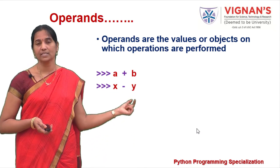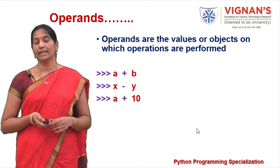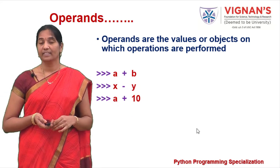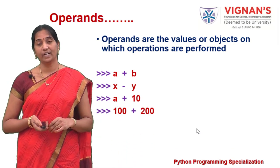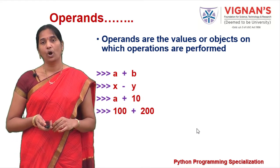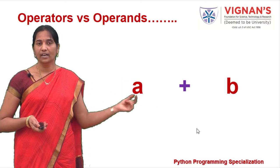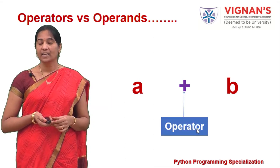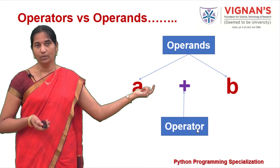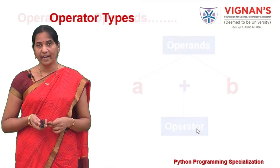Consider x minus y — here minus is the operator and x and y are the operands. In the expression a plus 10, plus is the operator, while a is a variable and 10 is a constant — both acting as operands. Similarly in 100 plus 200, both 100 and 200 act as operands. So operands are the variables or values on which the operation is performed.